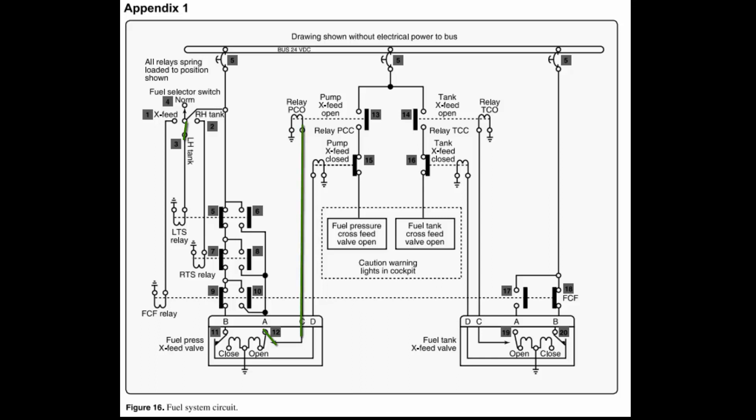Now, if it had failed, what does not happen? What does not happen is pin 13 contacts don't close, which means that the fuel pressure cross-feed valve open light does not illuminate. The easy way was just to look at what the relay is going to turn on or turn off — and that was your answer.